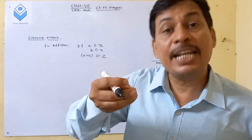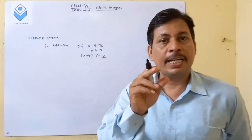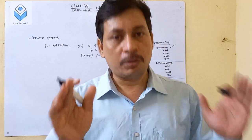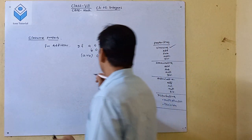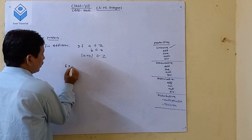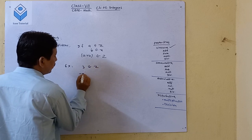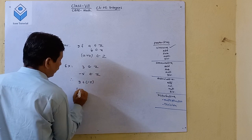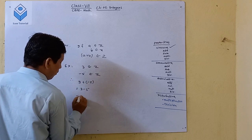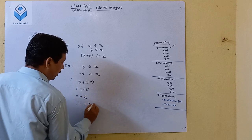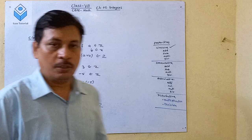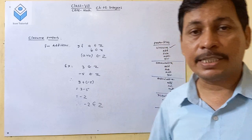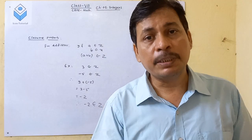What does 'belongs to Z' mean? It means if A is an integer and B is an integer, then A plus B — the result is also an integer. For example: 3 belongs to Z, minus 5 belongs to Z. Therefore, 3 plus (minus 5) equals 3 minus 5, which is minus 2. Therefore, minus 2 belongs to Z, which is also an integer.